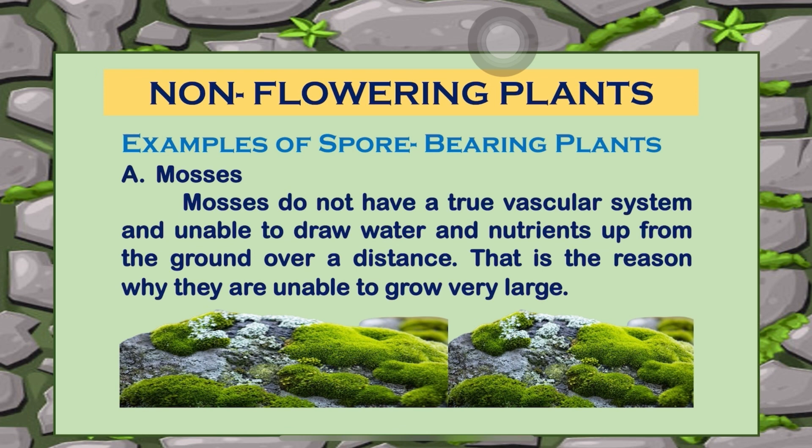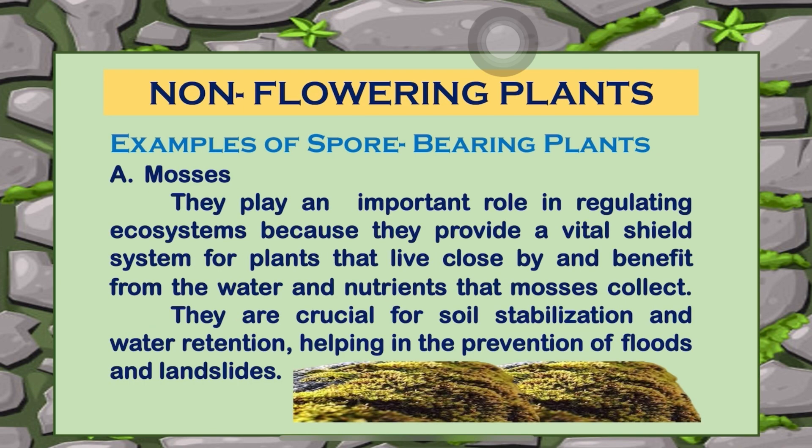That is the reason why mosses are unable to grow very large. They play an important role in regulating ecosystems because they provide a vital shield system for nearby plants that benefit from the water and nutrients that mosses collect. They are also crucial for soil stabilization and water retention, helping in the prevention of floods and landslides.